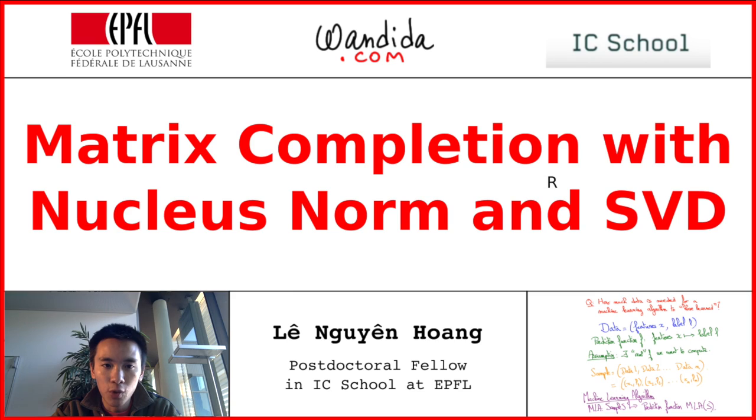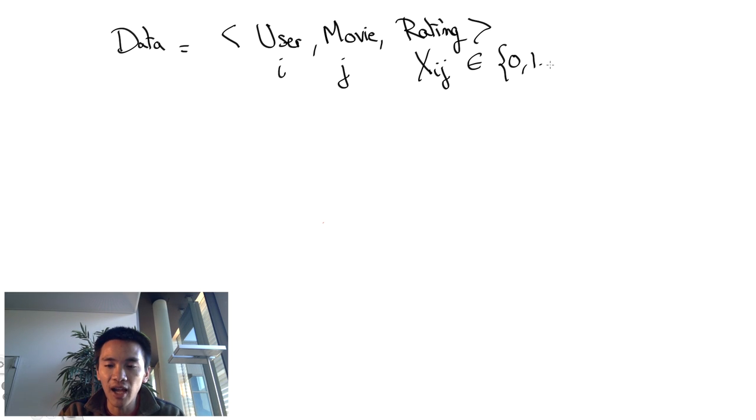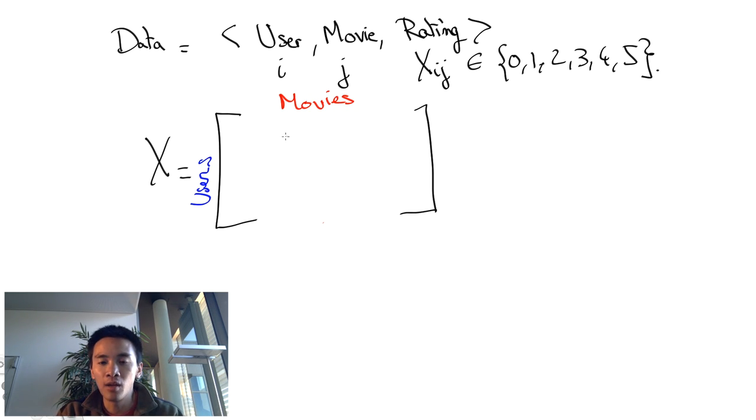In this video I'll show you how the singular value decomposition has turned out to be a powerful and very useful tool to solve this problem. Let's first describe the matrix completion problem as posed in the Netflix prize. The data given by Netflix for the competition were entries of the form user, movie, date of rating, rating. Let's forget about the date of rating for today. What we're left with are ratings X_IJ in 0 to 5 where I is some user and J is some movie.